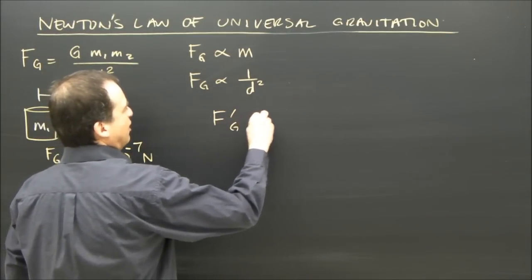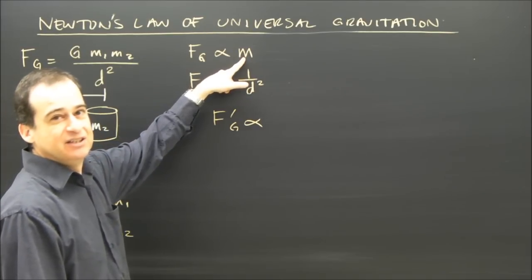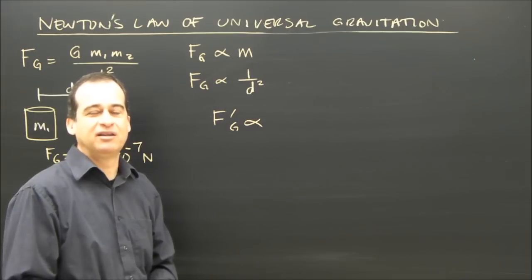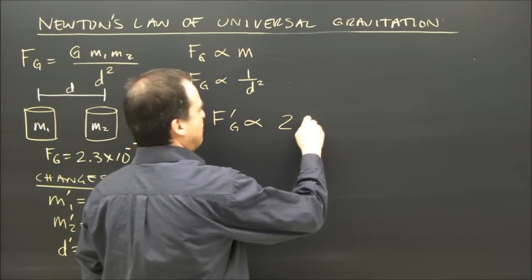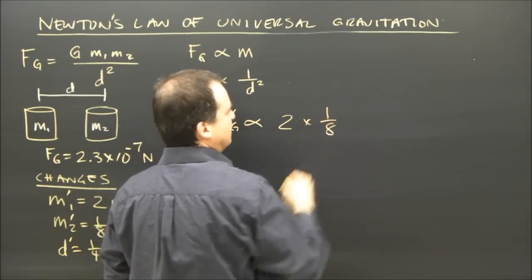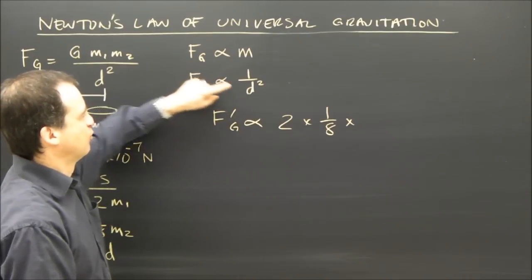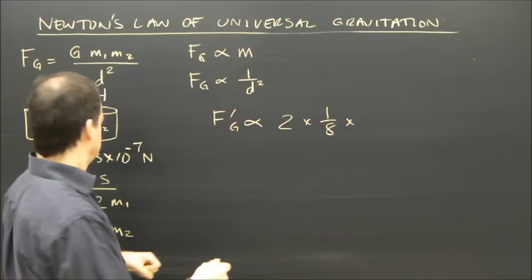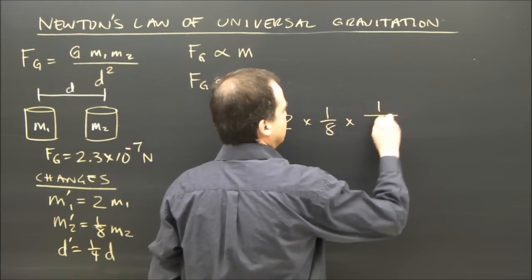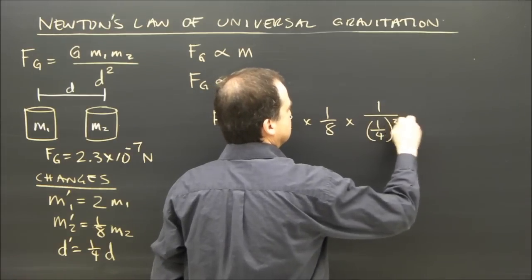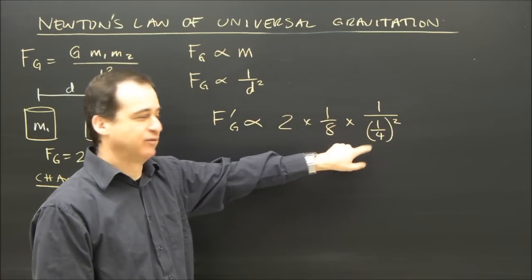The new gravity — how is it changed? It varies directly with the mass, so any change to the mass directly impacts the final number. I made the first mass twice as big, and the second mass one-eighth as big. For the distance, I made it one-quarter as big. But for distance it's an inverse square, so whatever change I made to the distance I have to put in the denominator — times one over one-quarter squared. I have to square the whole thing — directly with the mass, directly with the mass, inversely with the square of the change in distance.